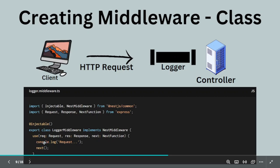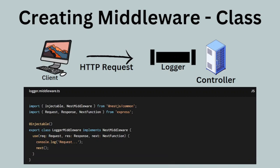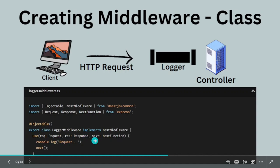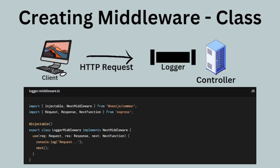The middleware has three types of arguments: request, response, and next. Request means whatever request is coming in, and response means whatever the response is going to be — though there is a difference between a middleware and an interceptor which we will study later. The next function is used to send the request to whatever the next middleware is, or if there is no next middleware, to the controller. Middleware is considered 'dumb' because it doesn't know where the request will go next.